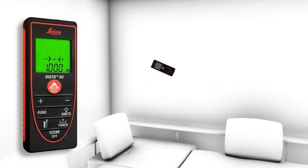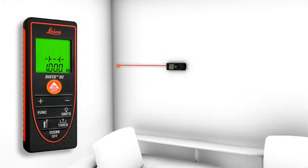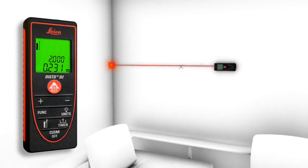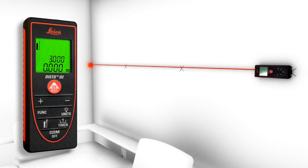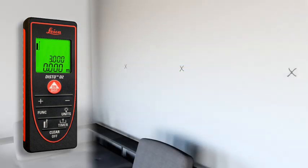The stakeout function is used to stake out equal distances. The instrument gives an audible signal as soon as a preset distance or a multiple thereof is reached.